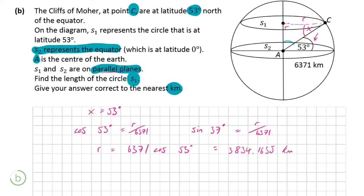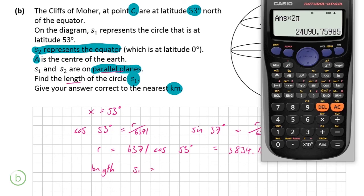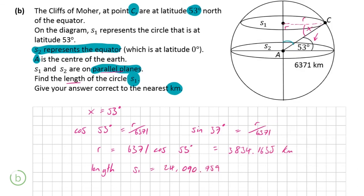So that's the radius but we're actually not done because we're looking for the length so we need the circumference and to do that we're basically going to multiply this value for our radius by 2pi and that is going to give us a nice answer for the circumference. So the radius multiplied by 2pi is going to give us 24,090.759 which correctly to the nearest kilometre is going to be 24,091 kilometres. So that is the length of S1 and that is actually it for part B.